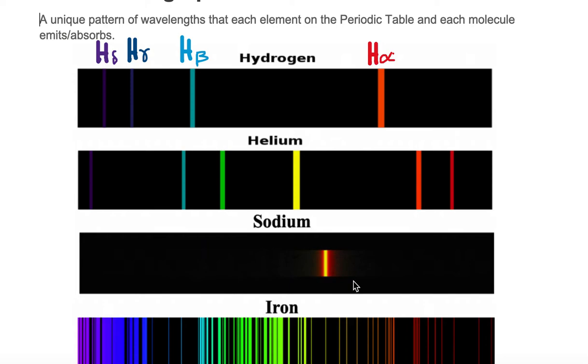Sodium only has two yellow lines in emission. Sodium doesn't emit red, orange, green, blue, indigo, or violet. It only emits yellow. So you would see only yellow for sodium in emission.